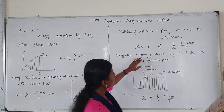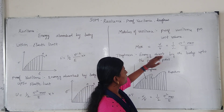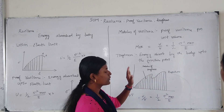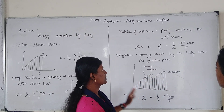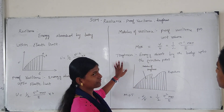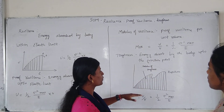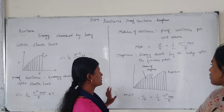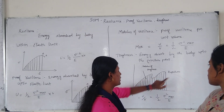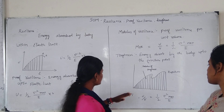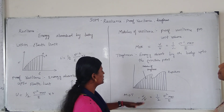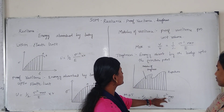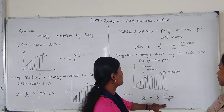Next, Toughness. Toughness is the energy absorbed by the body up to the fracture point. The energy absorbed by the body up to the fracture point is noted as Toughness. The Modulus of Toughness = U / V = (1/2) × σ² / E, where the fracture point is considered.